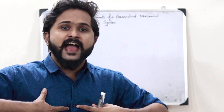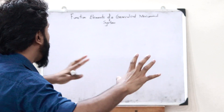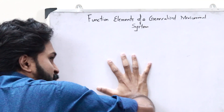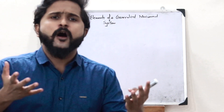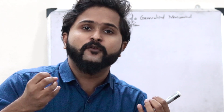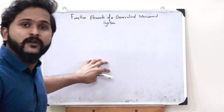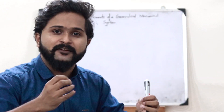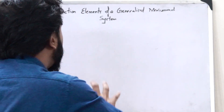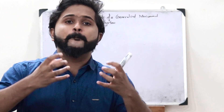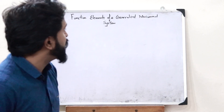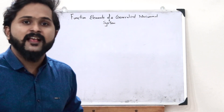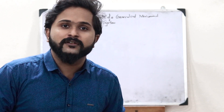Let us imagine that I am applying 5 Newton of force on top of this particular board. But how do we know that I am applying exactly 5 Newton of force? For that, we need some kind of a measurement device that tells us that Rishi is applying 5 Newton of force on top of this particular board. Such a device that tells us the measurement of whatever quantity we need is referred to as a measurement system.